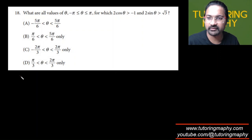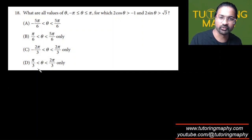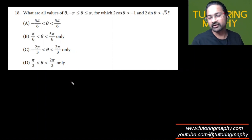Let's talk about this one. What are the values of theta for which 2 cos theta is greater than negative 1 and 2 sine theta is greater than root 3? I think that's a good idea if we can rule these out from options one by one.